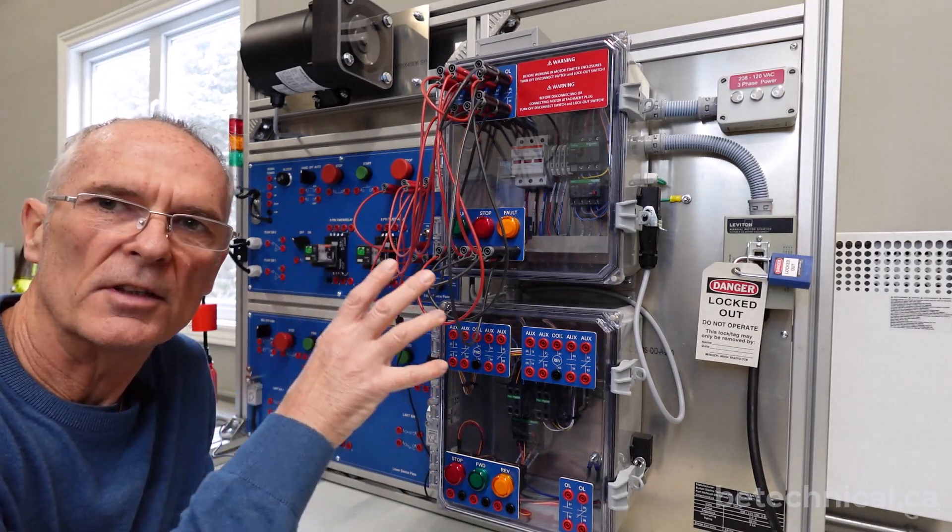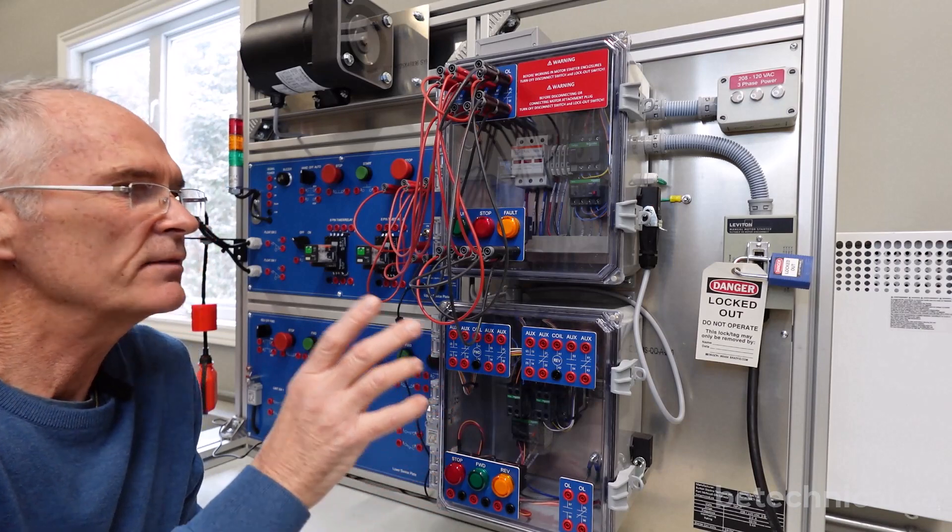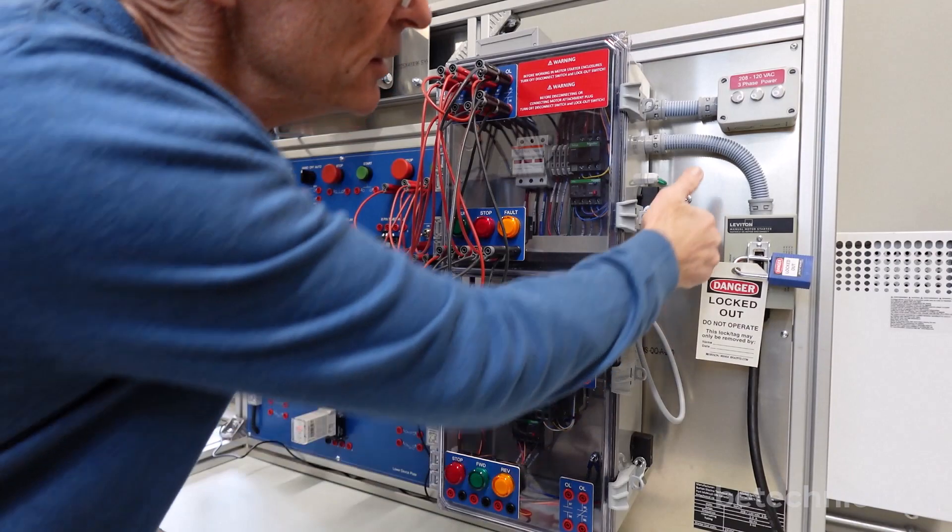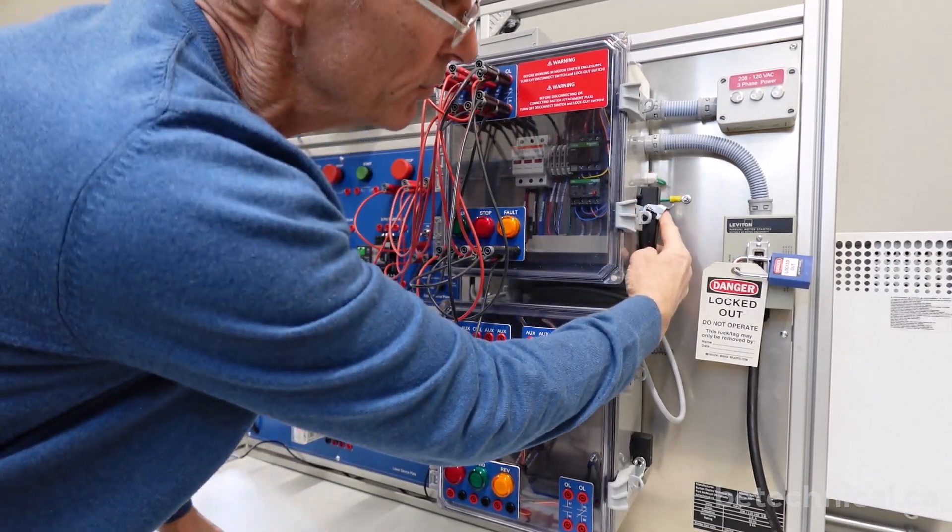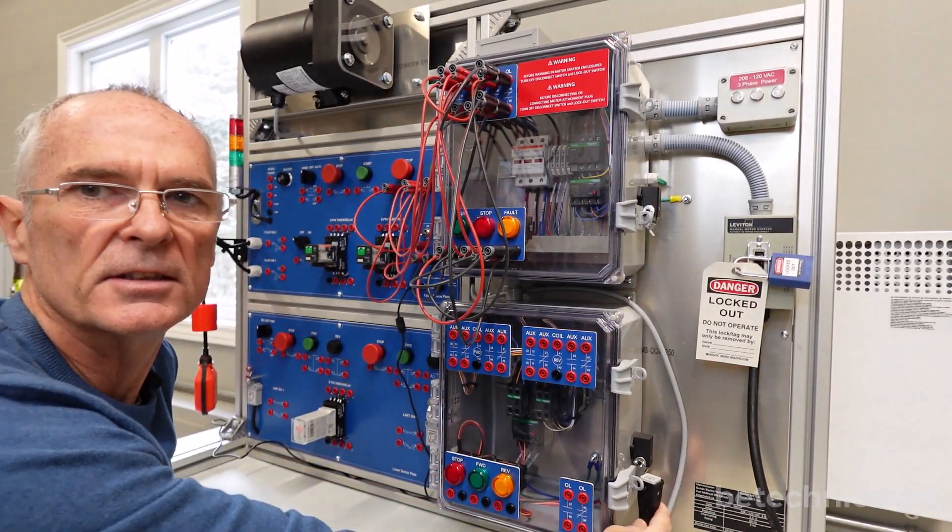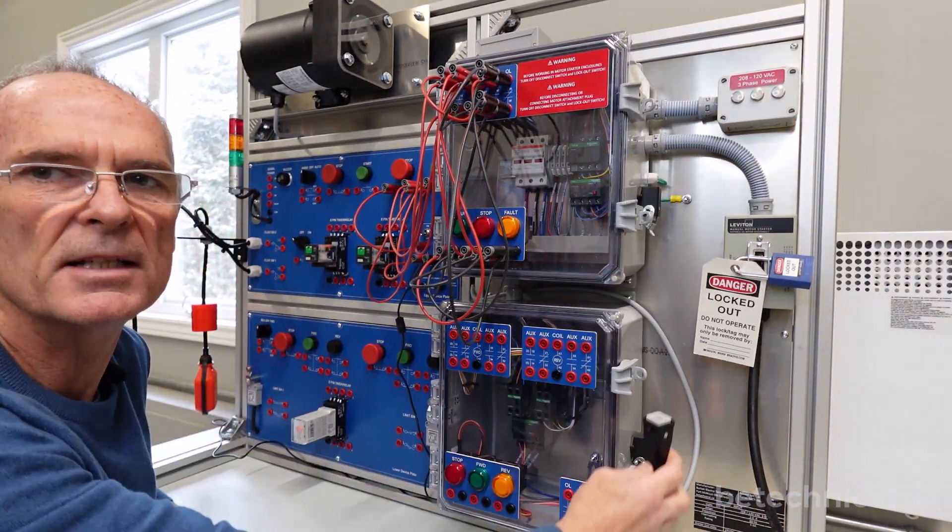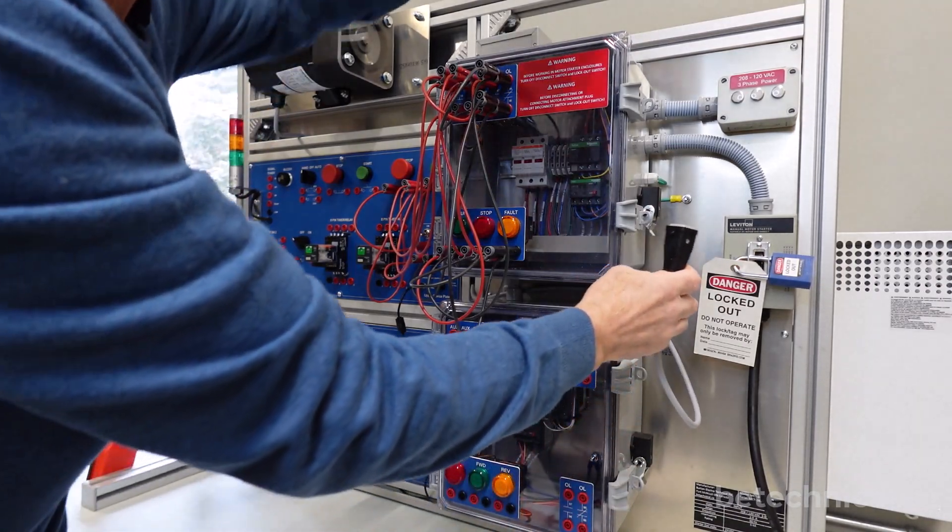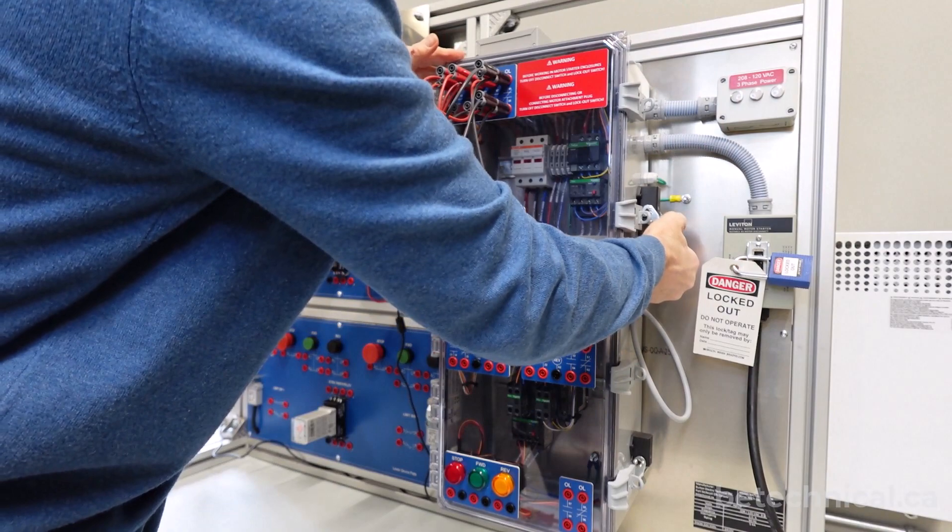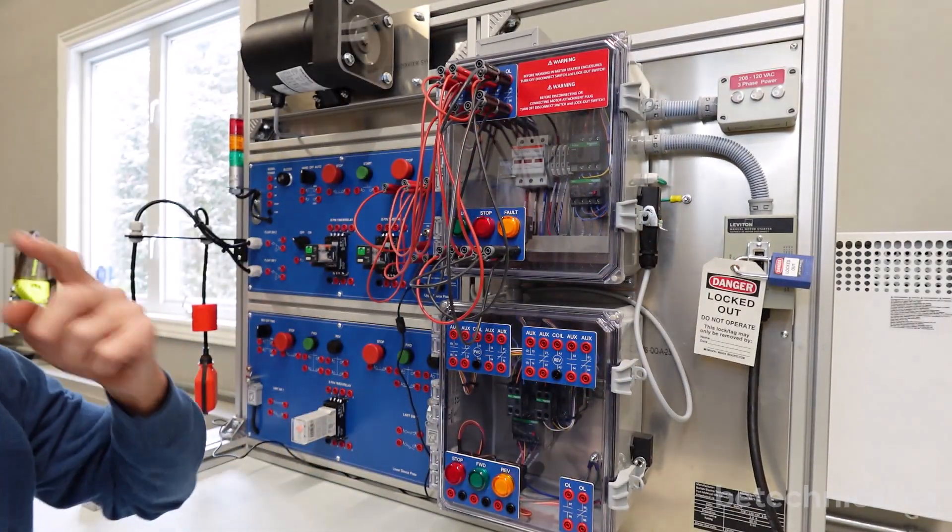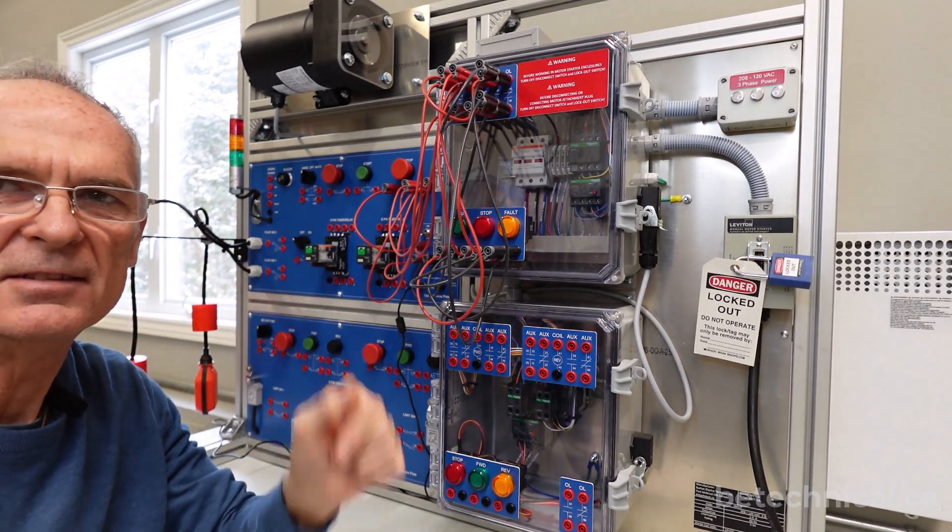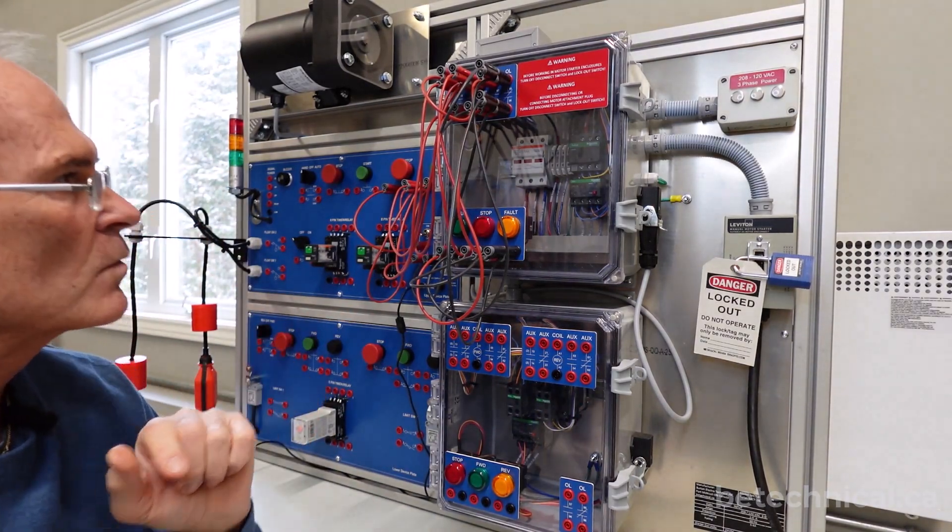When you're working with non-reversing and reversing projects, you have to switch between the two enclosures. You have to disconnect the motor from the non-reversing and connect it to the reversing and vice versa depending on which projects you're working on. So right now I have a project wired up for non-reversing, so I'm going to connect that. So I have the motor connected to the non-reversing. So that's something that they forget once in a while. They hit the start button and nothing happens.